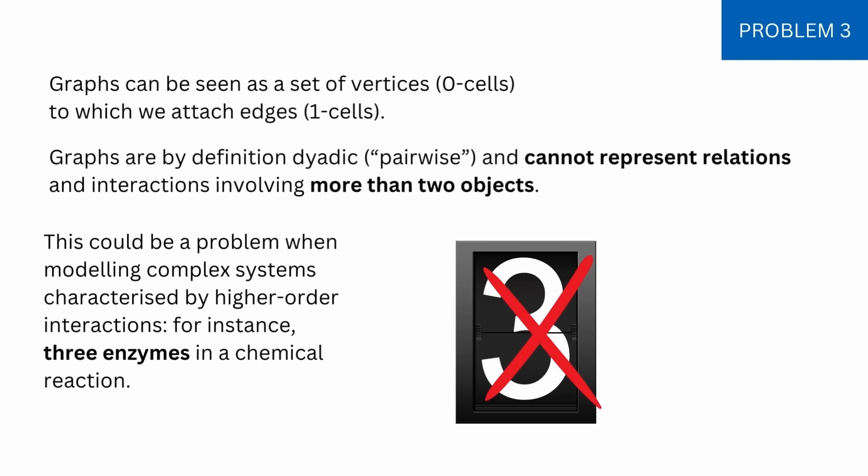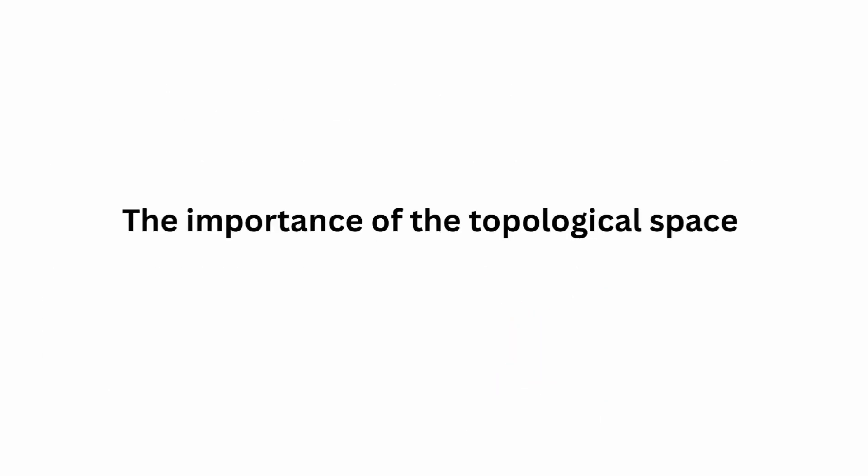Problem three is really important if you work in chemistry, pharma, or bio: graphs are by definition dyadic, meaning pairwise. You have two vertices connected by an edge. You can have 1000 vertices, but the dimensionality of the graph matters. It is a real hard limitation that you cannot represent relations and interactions involving more than two objects. This is a problem when modeling complex systems characterized by higher-order interactions — for instance, if you have three enzymes in a chemical reaction, you will run into trouble.